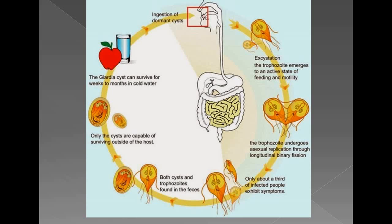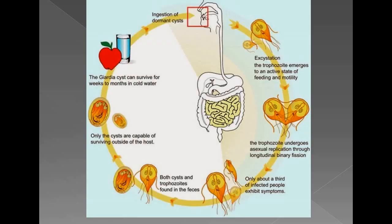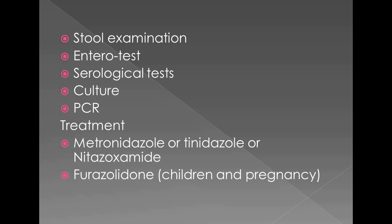The trophozoites further form cysts, which are passed in the feces. Generally, the patient passes cysts in the stool, but if there is a fulminant infection, both cysts and trophozoites will be found. Clinically, the patient has diarrhea, and in stool examination we see both cysts and trophozoites.